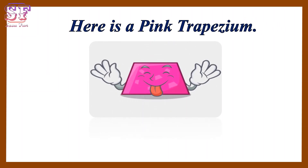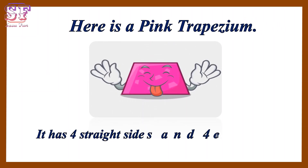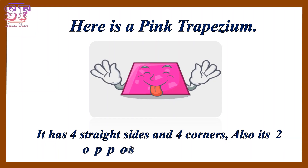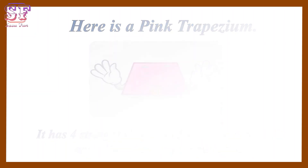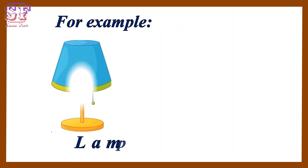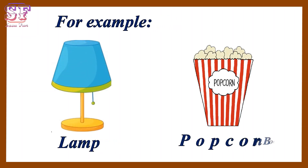Here is a pink trapezium. It has four straight sides and four corners. Also, its two opposite sides are parallel. For example, lamp and popcorn box.